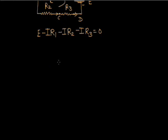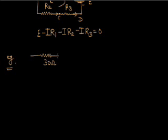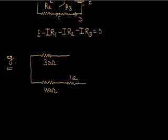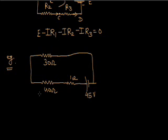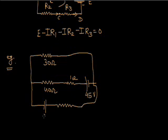Let us take another example. Here we have a 30-ohm resistor, a 40-ohm resistor, a 1-ohm resistor, and a cell of 45 volts. Connected to this is another cell of 80 volts, with a 20-ohm resistor.